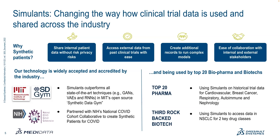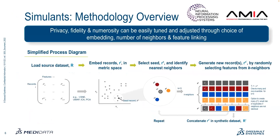Our proposed algorithm, Simulants, loads a source data set, embeds records in a low-dimensional space, selects a seed record, and identifies its nearest neighbors. The algorithm then generates a new record by randomly selecting features from key neighbors. This process can be repeated n times to generate a data set at any scale. This methodology has been published at AMIA 2022 and NeurIPS 2022.